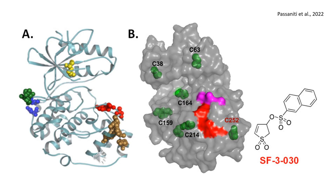C252, highlighted in red font, is identified as the primary modification site at 90% via high-resolution LC-MS. SF-3-030 forms a covalent bond with C252, located adjacent to the F-recruitment site (red) and TXY motif (magenta), disrupting protein-protein interactions required for oncogenic ERK2 signaling.